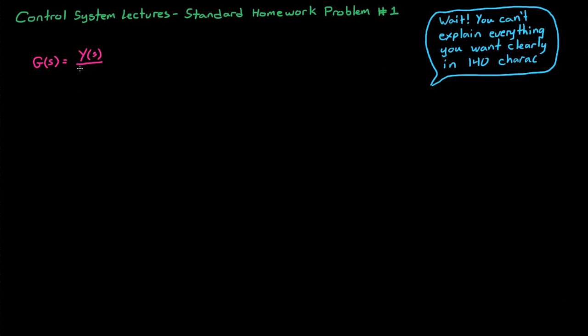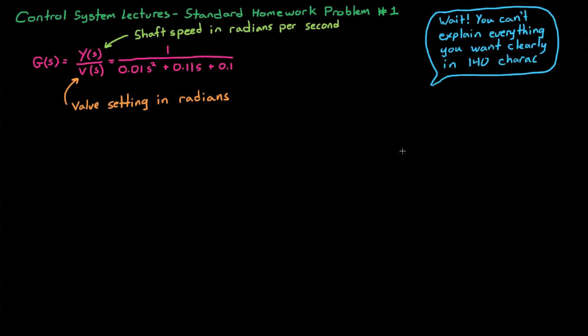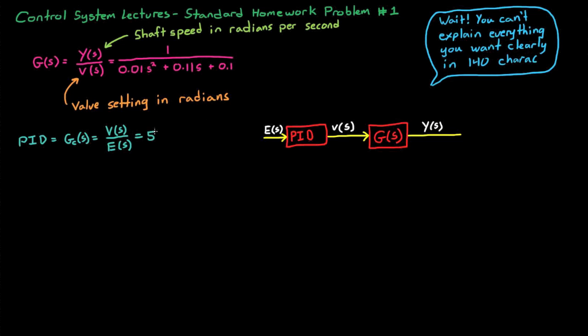We're told that we have a diesel engine that's driving a load, and we're given a transfer function g that relates the fuel valve setting, v in radians, to the load shaft speed, y in radians per second. And I'll draw this in block diagram form so that you can see that the valve setting is the input into g, and the shaft speed is the output. The fuel valve setting is provided by a PID controller, and we're given this transfer function, g sub c, and I'll write it out here. Except for tau, which is the red letter. This is the variable integral action time in seconds, and we get to choose this value.